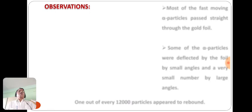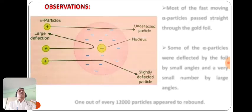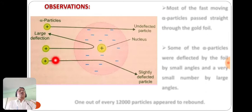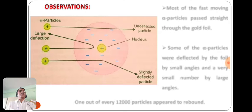The observations of the alpha particle scattering experiment are as follows: Most alpha particles passed straight through — they were undeflected. Some alpha particles were deflected by the foil with slight deflection. Very few alpha particles showed large deflections. And very few — about 1 out of every 12,000 alpha particles — appeared to rebound, meaning they went back.